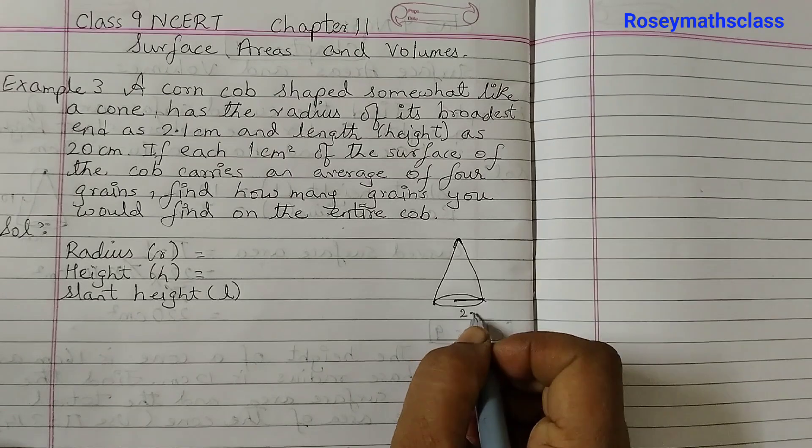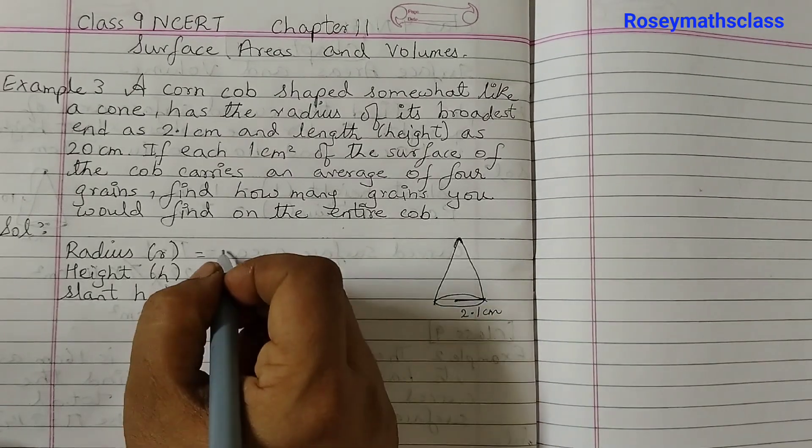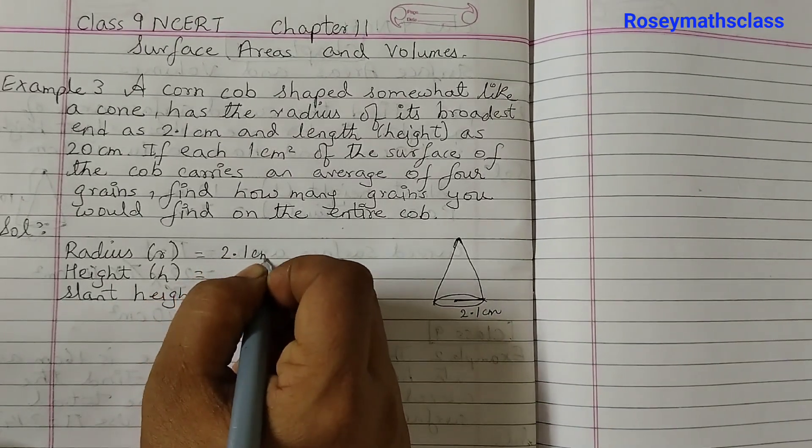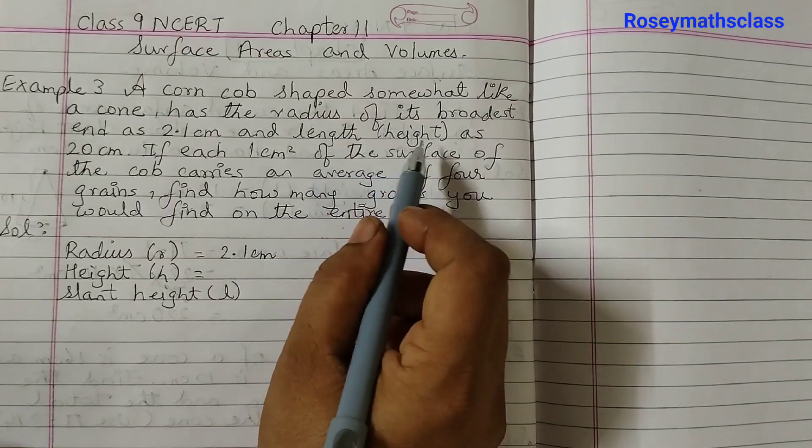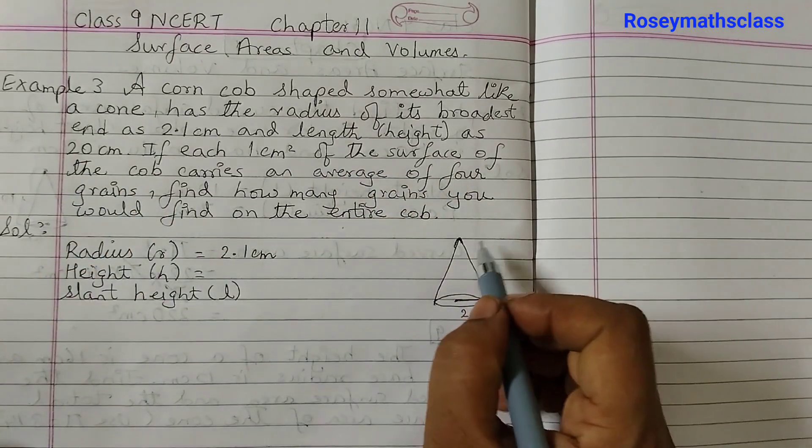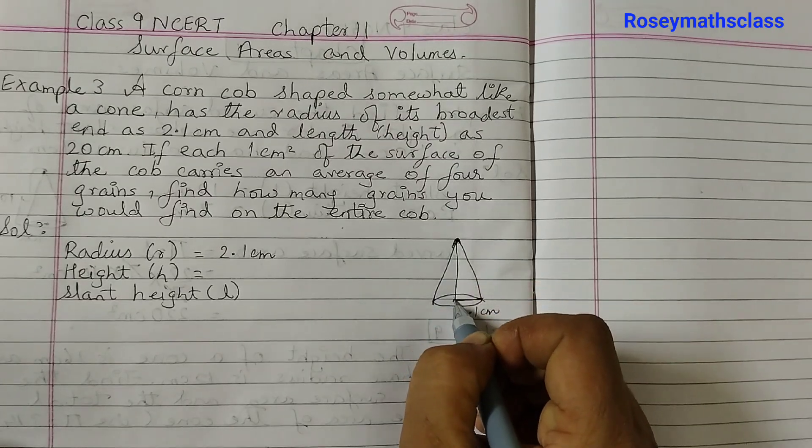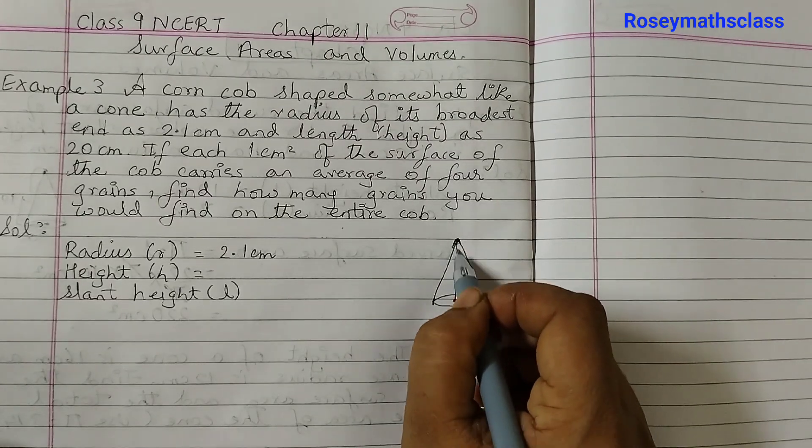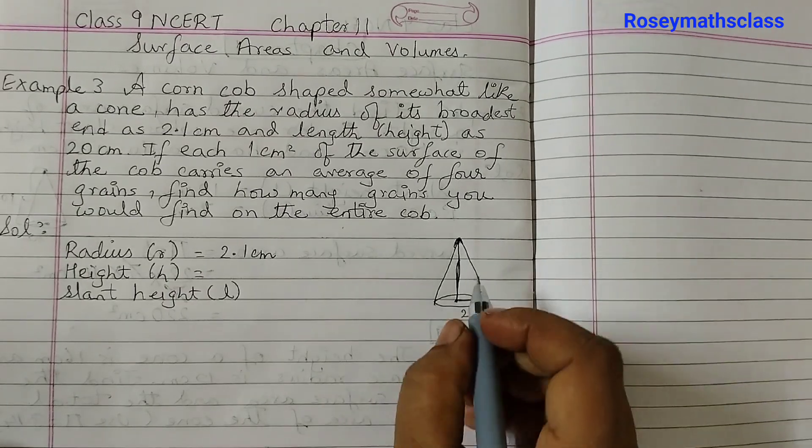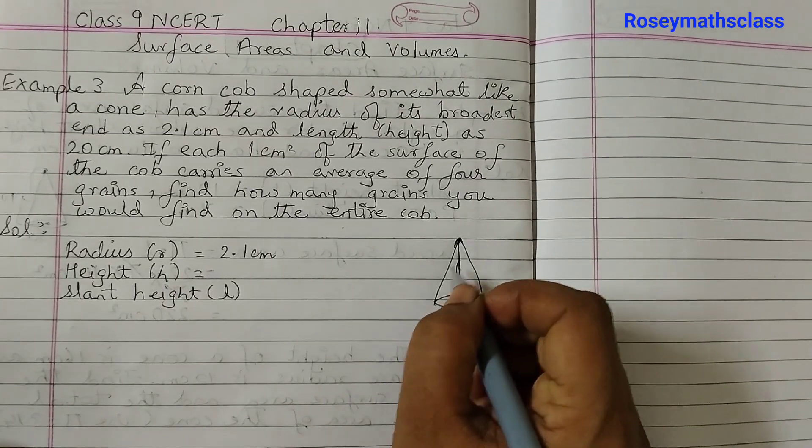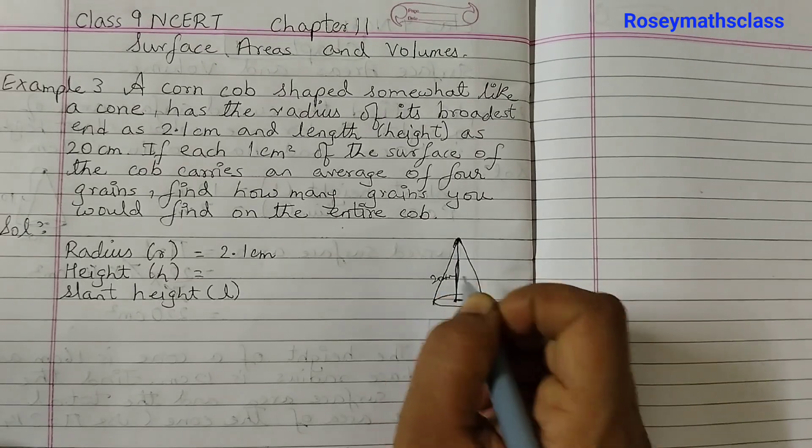So the radius is given as 2.1 cm. Let's write here as well. And the length or height as 20 cm. Height means from this point till the center. So this is the height. It's a straight perpendicular line which is 20 cm.